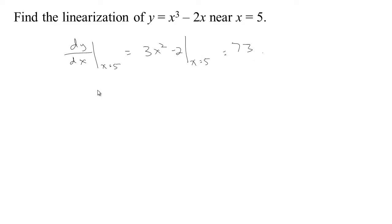So we know the slope of our line. And we also know that in this original function, if X equals 5, Y is going to be 5 cubed minus 2 times 5. 5 cubed is 125, minus 10 gives you 115. So we have the slope is 73. We also know that the graph goes through this point, 5, 115. And that's enough to figure out the linearization.